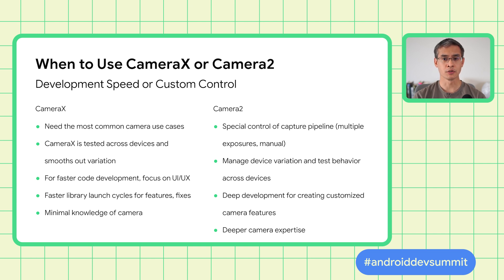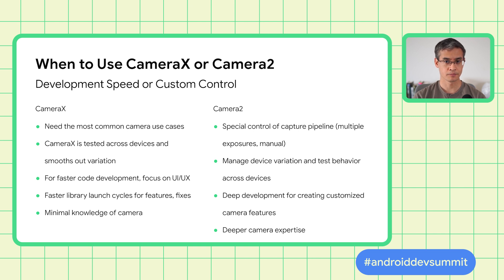CameraX is suitable for faster code development, letting you focus on UI and UX flows. Camera2 allows deeper development to create customized camera-based features. CameraX has frequent launch cycles and you can start with minimal camera knowledge. Camera2 updates with Android releases and requires deeper camera expertise.